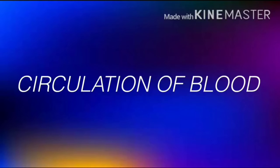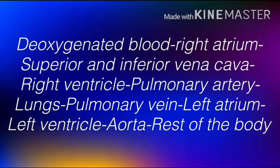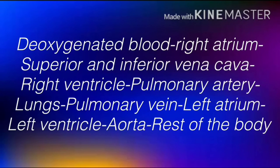Now let's start with the circulation of blood. From different body parts, deoxygenated blood is collected to the heart and enters the right atrium through blood vessels called the superior and inferior vena cava. The deoxygenated blood then moves into the right ventricle. In order to purify the blood, it is sent to the lungs via the pulmonary artery.